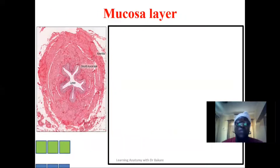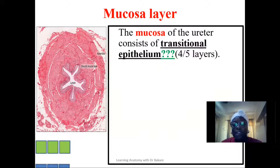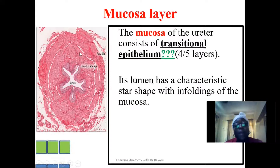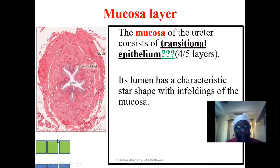The mucosa layer is the deepest and innermost layer, lining the lumen of the ureter. The lumen is the central opening, and it is not round — it is star-shaped. The epithelium lining the ureter is a transitional type of epithelium, seen in four or five layers, which creates the star-shaped appearance of the lumen. This transitional epithelium changes depending on the situation — it is not specific and is always transitioning from one form to another depending on the content of the ureter.